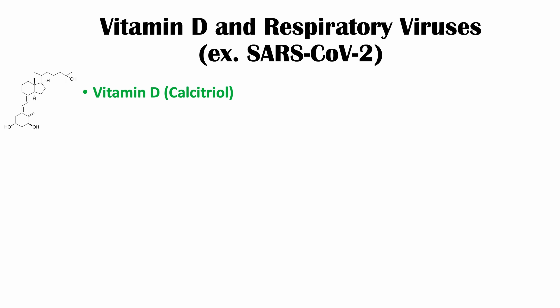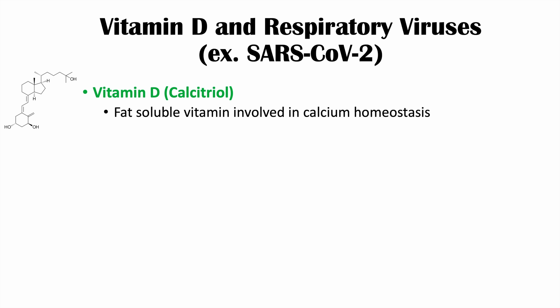So what is vitamin D? There are actually multiple forms of vitamin D. We're going to talk about calcitriol, the active form of vitamin D. Vitamin D is a fat-soluble vitamin involved in calcium homeostasis, but it is also known to have roles in immune system modulation. Because vitamin D plays a role in modulating the immune system, there has been question as to what role it plays in SARS-CoV-2 or COVID-19 infections.